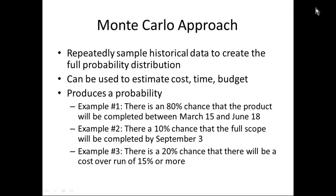So what's the better way to do this? The better way is called Monte Carlo. Monte Carlo is a very sophisticated statistical technique which uses the idea of repeatedly sampling historical data to create the full probability distribution.